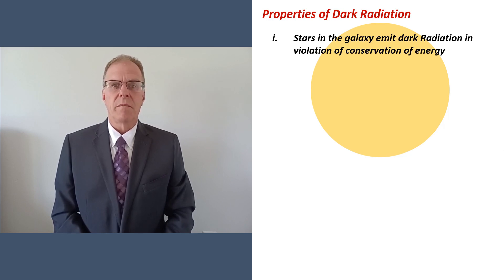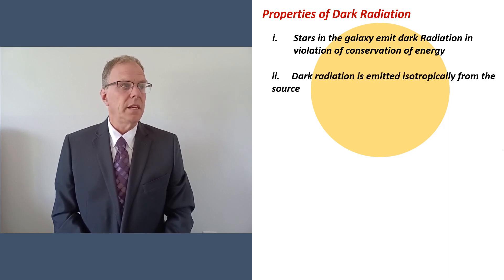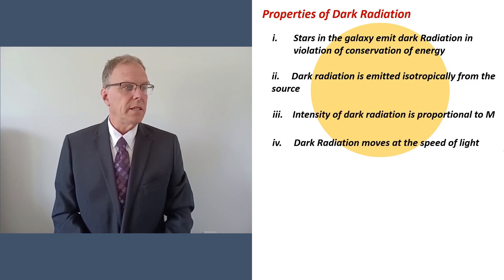This means for a star of mass m that the mass does not decrease as this energy is radiated. We assume further that radiation propagates isotropically from the source with an intensity profile proportional to m and radiating at the speed of light.